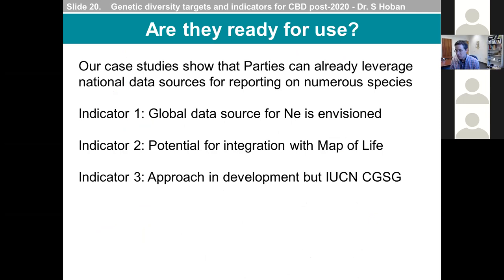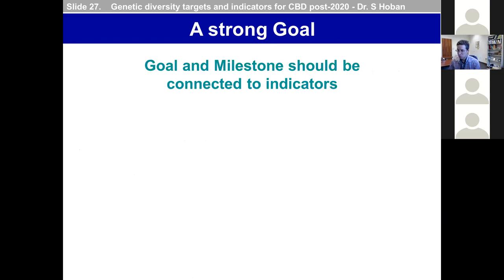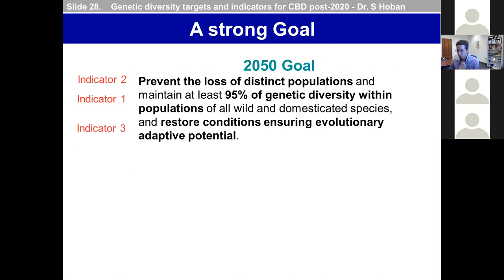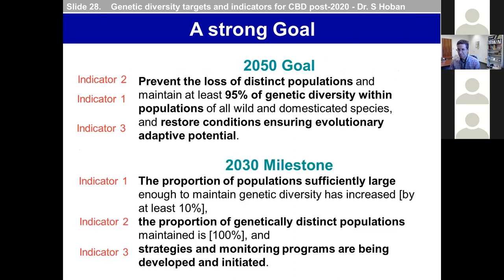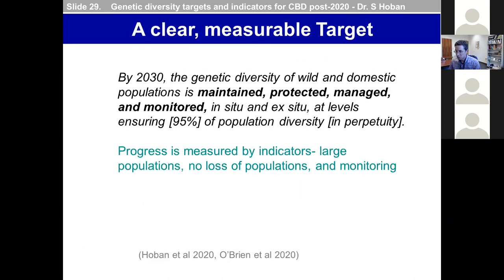The case studies in the second part of the webinar will show that parties can leverage their national databases for reporting on at least 10 carefully chosen and represented species per country. This gives national parties both agency and flexibility to use their available data. We are working to develop global and scalable decision support tools, including databases and workflows for each of the indicators. It may be advisable to highlight both the loss of populations and the maintenance of genetic diversity in the goal and milestone, and for the target to connect more clearly to the indicators.